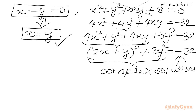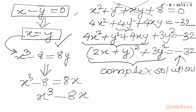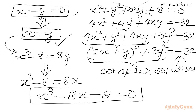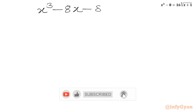Substituting y = x back into equation 1, x³ - 8 = 8y becomes x³ - 8 = 8x, or x³ - 8x - 8 = 0. We now need to solve this cubic equation.